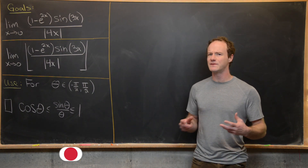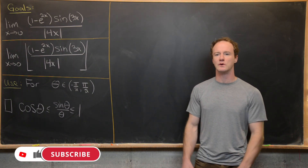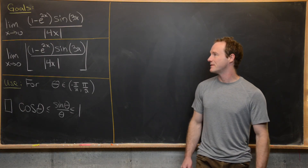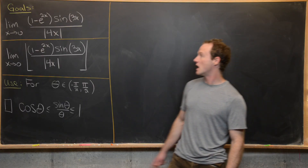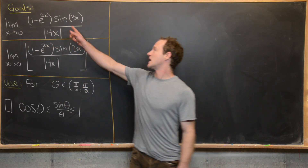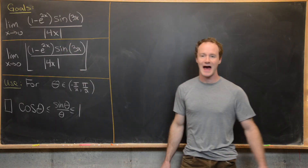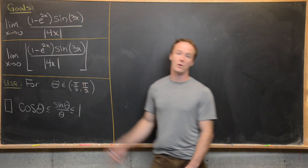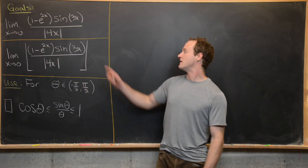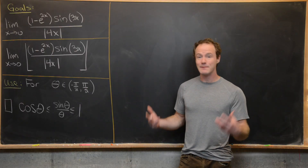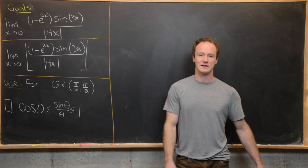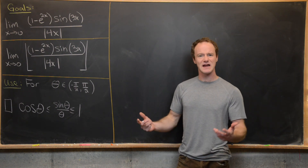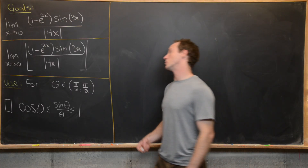Here we're going to look at two limits which seem fairly similar, but we're going to evaluate them in two very different ways. The first one is the limit as x goes to zero of 1 minus e to the 2x times sine 3x over the absolute value of 4x. The second one is the same limit except we have a floor around our limiting function. This first limit won't really require much more than L'Hôpital's rule.